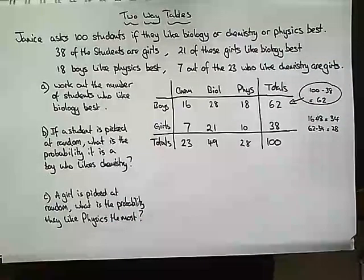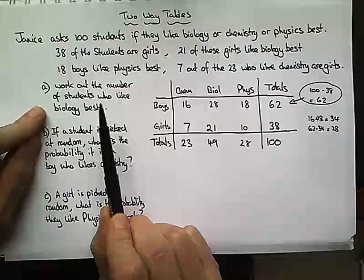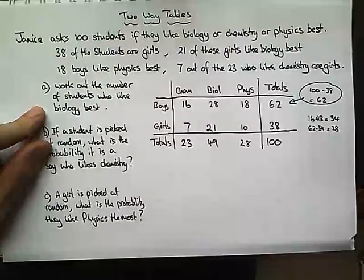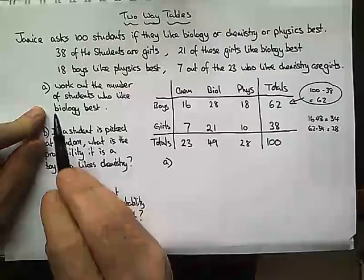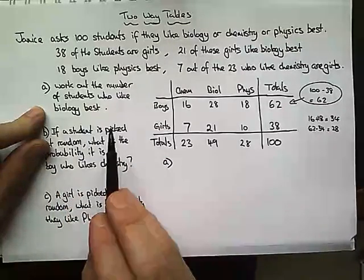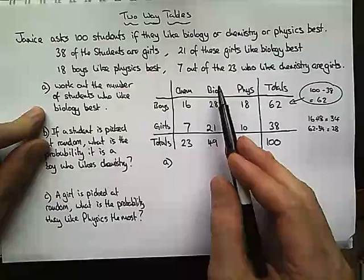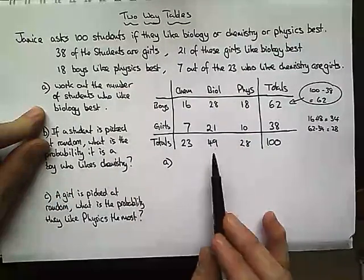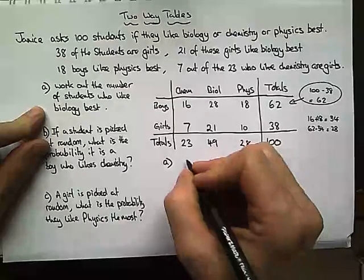So let's now focus on the questions. Work out the number of students who like biology best — this is pretty straightforward now. The number of students who like biology best is 49 students.